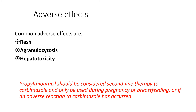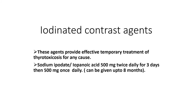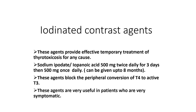Propylthiouracil should be considered second line to carbamazole and only used during pregnancy, breastfeeding, or if an adverse reaction to carbamazole has occurred. Iodine contrast agents provide effective temporary treatment from any cause — sodium ipodate or iopanoic acid 500 mg twice daily for three days, then 500 mg once daily for up to eight months. These agents block the peripheral conversion of T4 to the active agent T3 and are very useful in highly symptomatic patients.